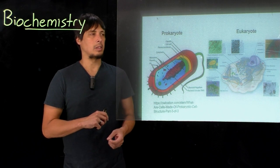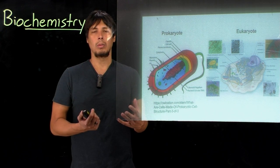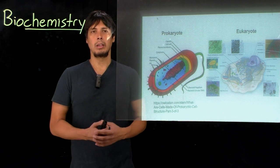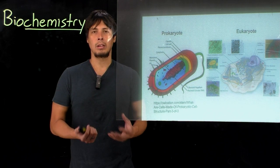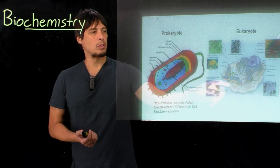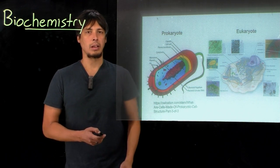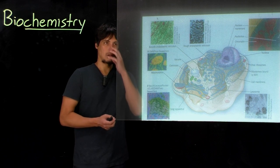In eukaryotes, this is where you typically see more what are called organelles. And these are very specialized compartmentalized structures within the cell that are surrounded by double membranes. And eukaryotes tend to have more of these, and they have different functions.